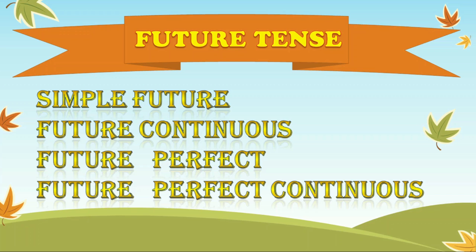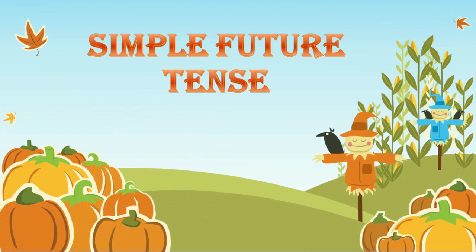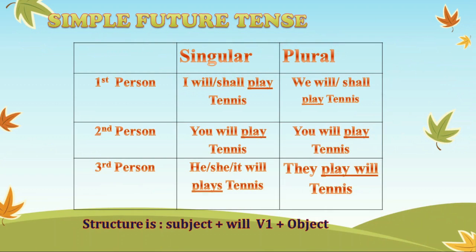Let's take the first one: simple future tense. The formula for simple future tense is subject plus will or shall plus the first form of verb plus object. For example, 'I will play tennis.' Here, I is the subject, will or shall is the auxiliary, play is the first form of verb, and tennis is the object.